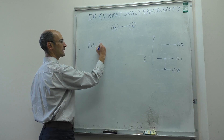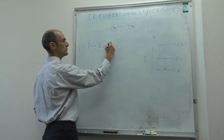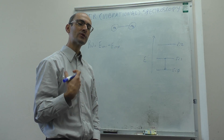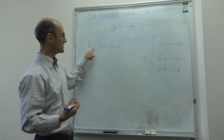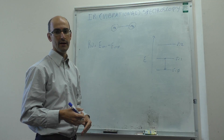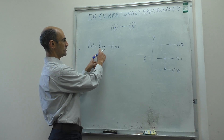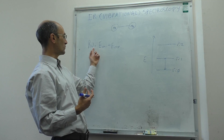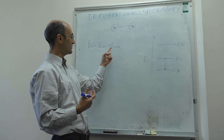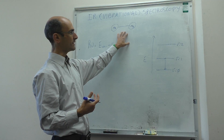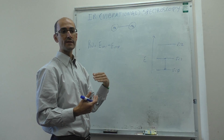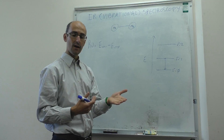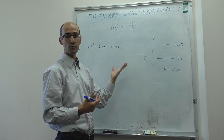The Bohr resonance condition tells us the photon energy equals the difference in energy between V=1 and V=0. The question is: can we predict exactly what frequencies will be absorbed? If we have energy expressions for these states, in principle we can predict where the peaks will appear. It turns out we already calculated these energy levels in quantum mechanics, because for diatomic molecules we can use a model called the harmonic oscillator.